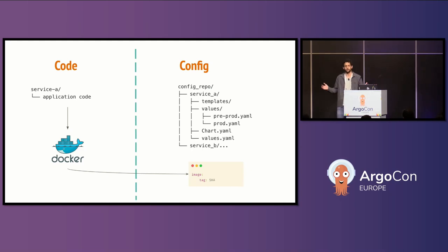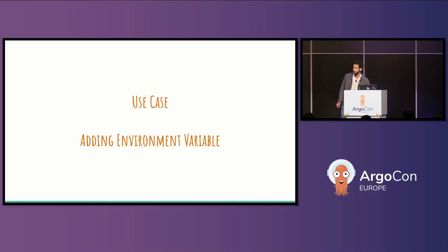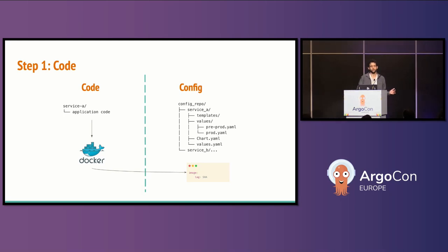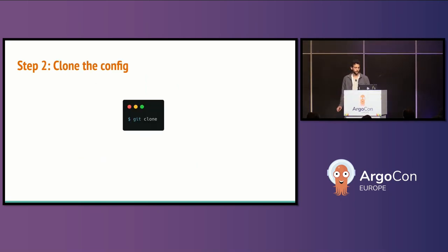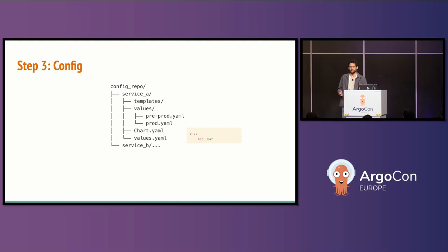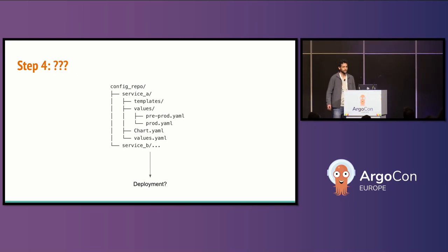Most of the time that was great, but in some use cases it increases the cognitive load significantly. The best example was adding an environment variable. The developer changes the code, introduces a change that uses that environment variable, and it deploys via the pipeline — but nothing happens in the application because the environment variable isn't being set. The developer then has to git clone the Helm chart repo, find the right service in that monorepo, introduce the change, open another PR, get another review — and then they're standing there asking how to deploy, having never done a PR like that before.